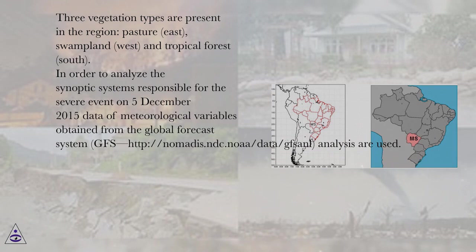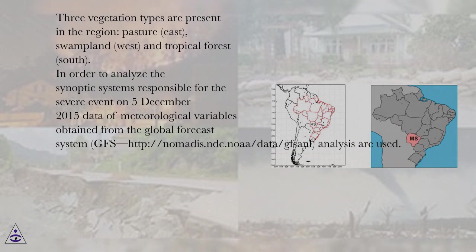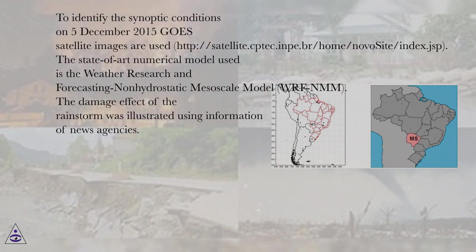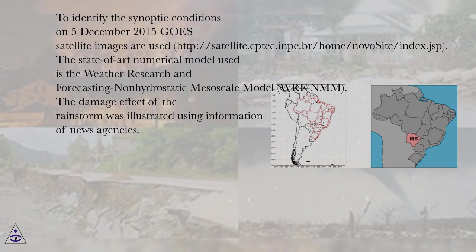In order to analyze the synoptic systems responsible for the severe event on December 5, 2015, data of meteorological variables obtained from the Global Forecast System (GFS) are used. To identify the synoptic conditions on December 5, 2015, GOES satellite images are used.